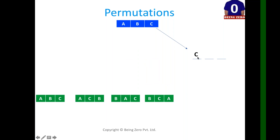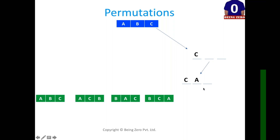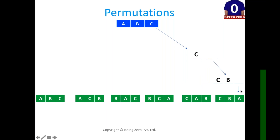We come back and go with 'c' as the first choice. 'c' asks the magical function: choices are 'a' and 'b'. First, 'c' takes 'a', and 'a' has one choice 'b' — generating 'cab'. Then 'c' takes 'b', and 'b' has one choice 'a' — generating 'cba'. Both choices of 'c' are exhausted, so we are completely done. These six are all our permutations.